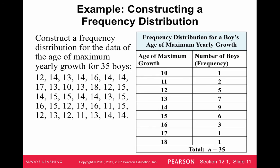One thing you'll be doing on discussions, assignments, and tests is putting together a frequency distribution. For example, given data on the age of maximum yearly growth for 35 boys — that is, what age were they when they grew the most in one year — we can organize this data. Since the range of ages is small, we list each individual value from 10 through 18 and then list the frequency next to it. Each column must be labeled: one for the variable and one for the frequency.